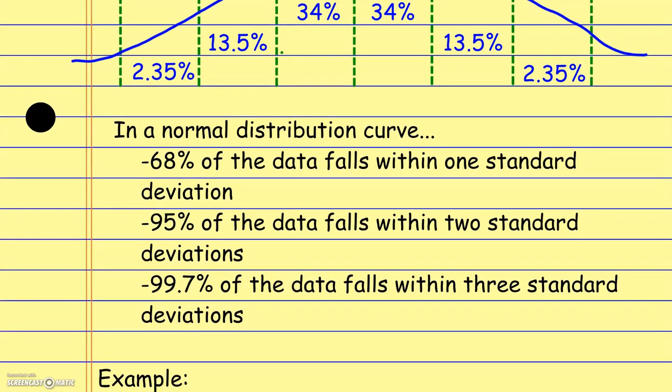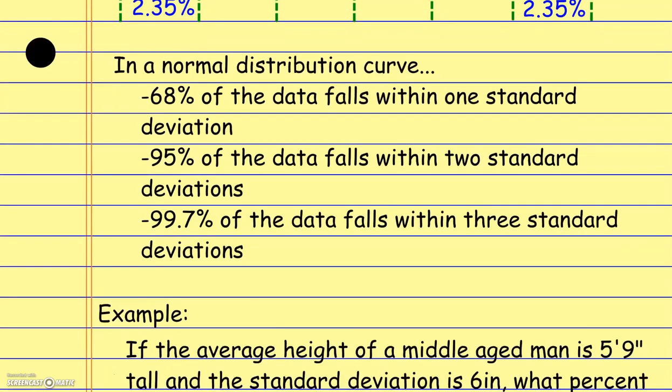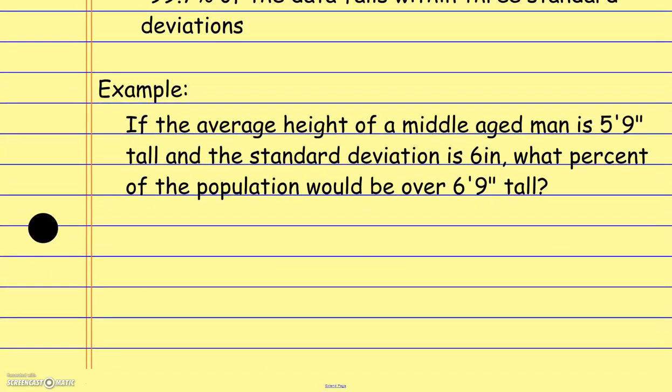When we look at this, we plot out all the data values and measure how many of each we have. Remember, the standard deviation is calculating how spread out the data is from the mean, and it lumps these data values into these percentage groups. For example, height is one of those things that's going to follow a normal distribution curve.